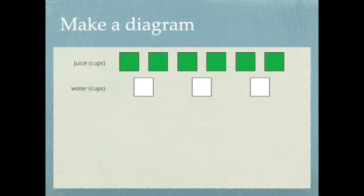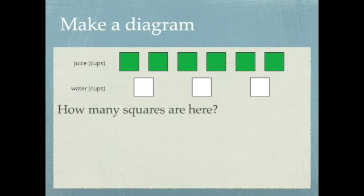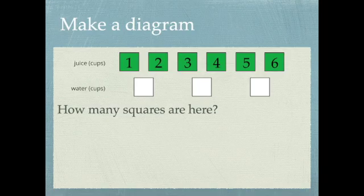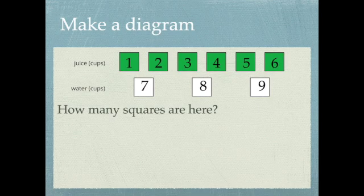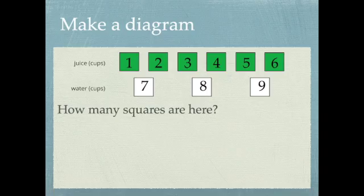I could draw a diagram like this. So the first thing that I would ask is how many squares are there and we could just count them out. One, two, three, four, five, six, seven, eight, nine. There's nine squares all together. That means when I'm done making all those juices and all that I'll have nine cups to drink.